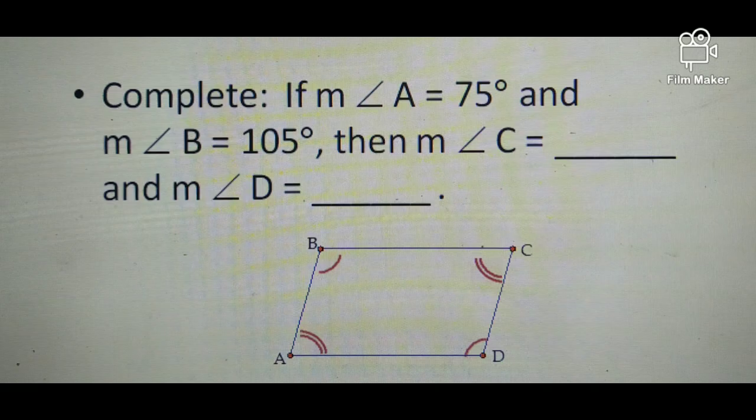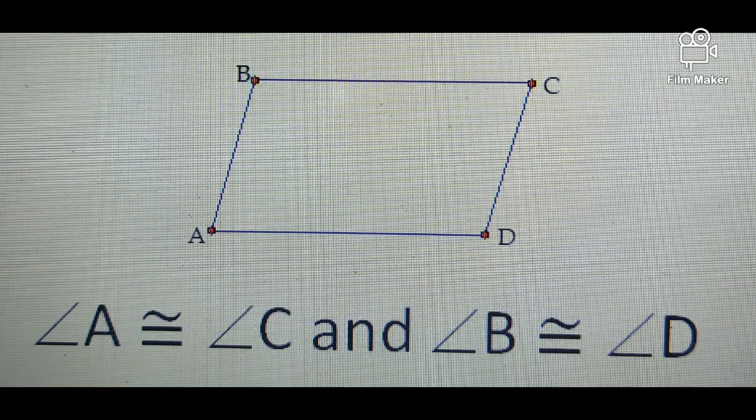For example, we have this problem. If the measure of angle A is 75 degrees and the measure of angle B is 105 degrees, then what will be the measure of angle C and angle D? So applying the second property of a parallelogram, we know that opposite angles are congruent.